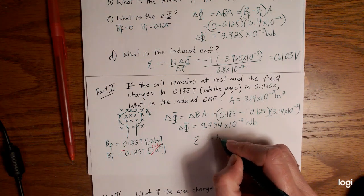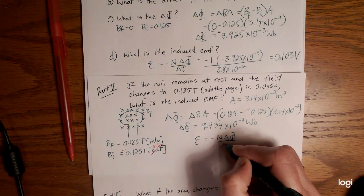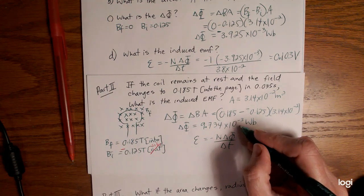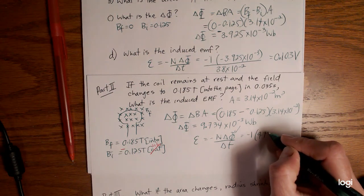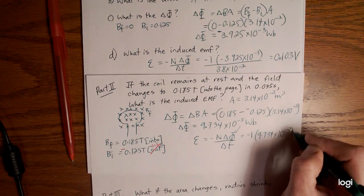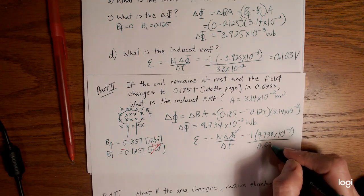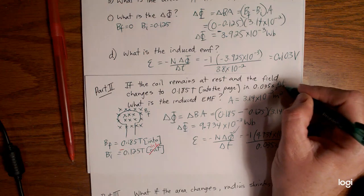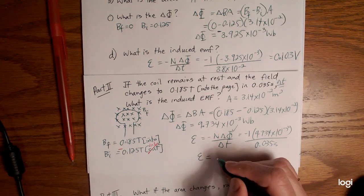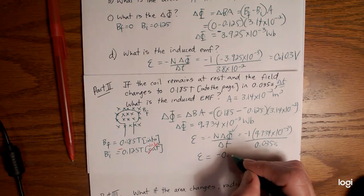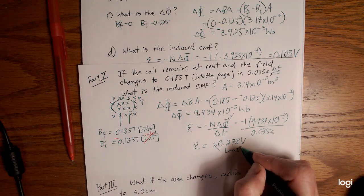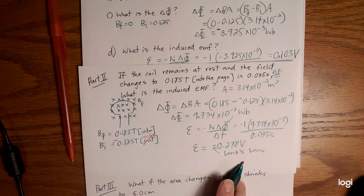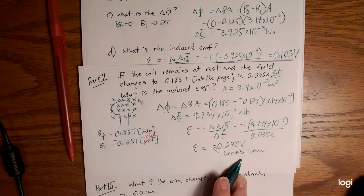But I'm not quite done because I actually need the EMF. The EMF is that negative n delta phi over delta t. So we have again just one loop, 9.734 times 10 to the negative 3, divide that by 0.035 seconds which was the time that was identified up here. So our EMF amount is going to be a negative 0.278 volts. Now remember this is just reminding us of Lenz's law.